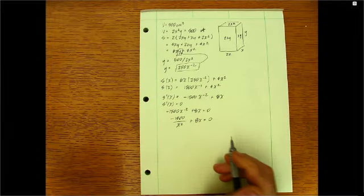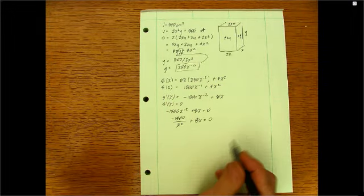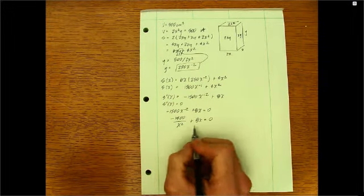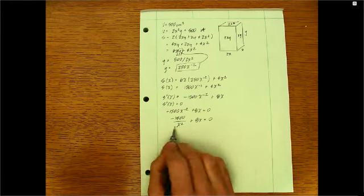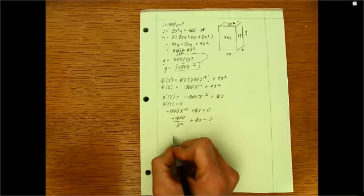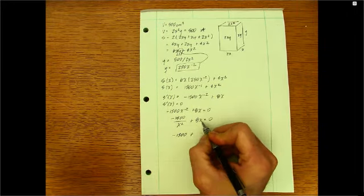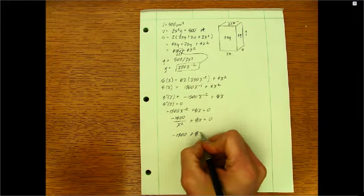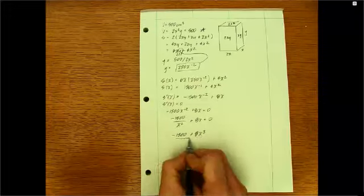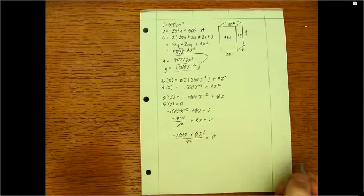So what I'm going to do is I'm going to find a common denominator and then think about how that ratio would be equal to 0. So the common denominator, obviously, 8X is over 1. So I'm going to have to use a common denominator of X squared, which will result in negative 1500 plus, okay, so to get it over X squared, I would multiply by X squared top and bottom. So I'd get 8X to the third on top here and X squared on bottom. That all equal to 0.